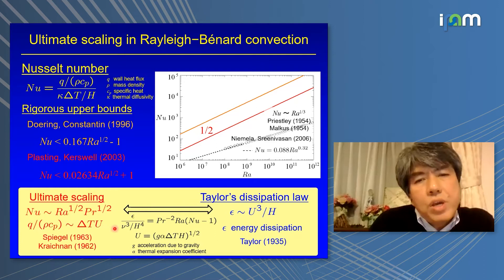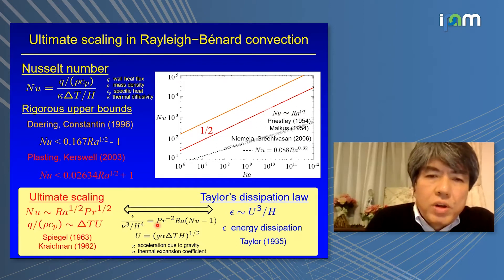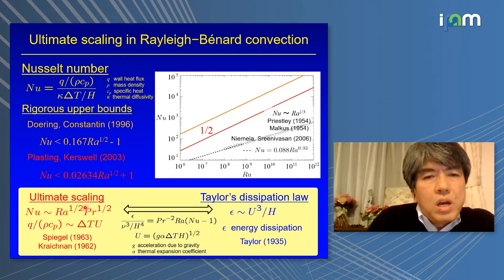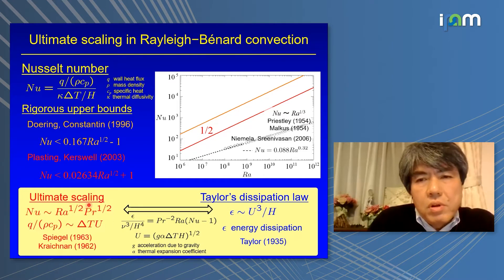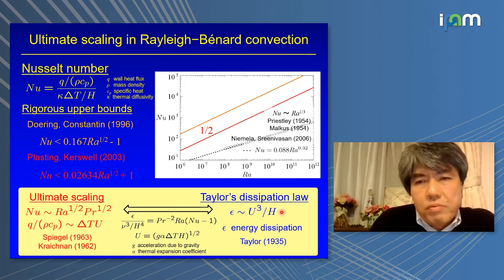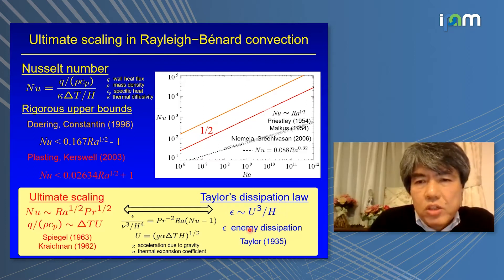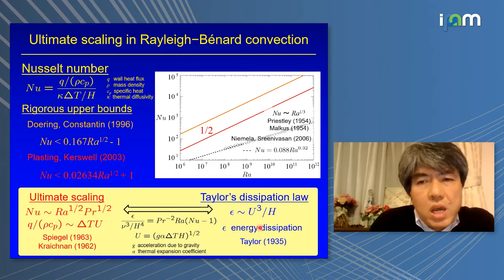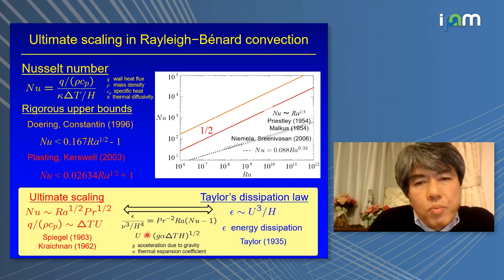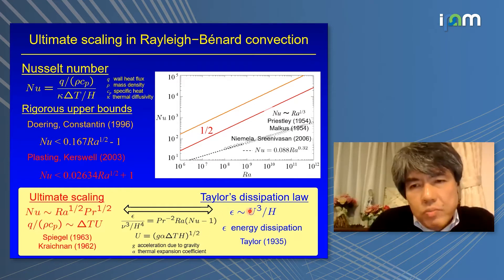If we recall the rigorous energy budget equation in this system, ultimate scaling relates to Taylor's dissipation law. In Taylor's dissipation law, energy dissipation ε is independent of kinematic viscosity. In this case, we have a velocity scale — the buoyancy-induced velocity cubed over h, where h is the full height of the fluid layer.